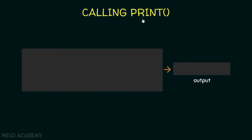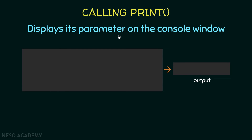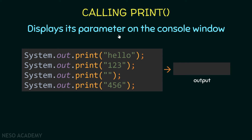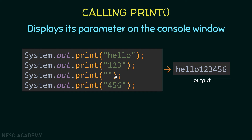Now let's look at the print method. It works the same as println but does not break to a new line. Using the same code with print instead of println, all output appears on the same line: first 'hello', then '123' right after, then nothing for the empty string, then '456'. The only difference between println and print is that there is no line break.